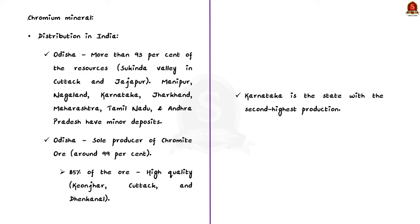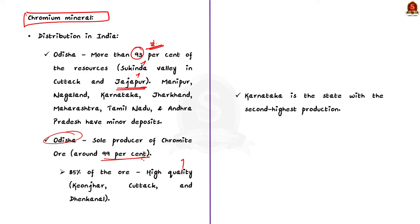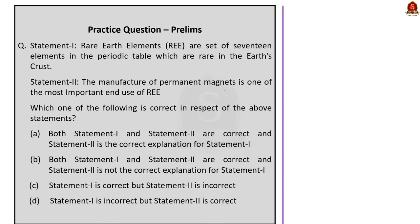Regarding chromium distribution in India: Odisha has more than 93% of the resources, abundantly available in the Sukinda Valley in Katakanad, Jajpur. Other states like Manipur, Nagaland, Karnataka, Jharkhand, Tamil Nadu and Andhra Pradesh have minor deposits. With respect to production, Odisha is the sole producer of chromite ore, contributing around 99%, with more than 85% of the ore being of high quality. The second place in production goes to Karnataka. Revise this often as it can be directly asked in examinations.